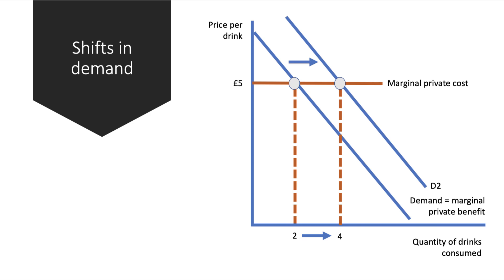If a good or service gives us more satisfaction — if it becomes increasingly fashionable — then our marginal utility and hence our demand curve will shift to the right. So at the same price of five pounds per drink, more units are being demanded, reflecting the increased private benefit.